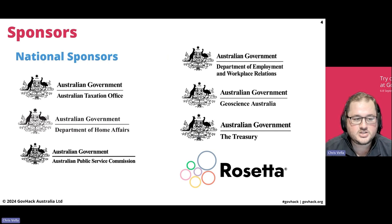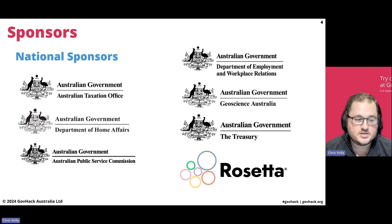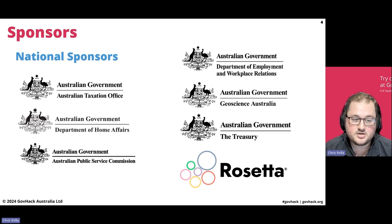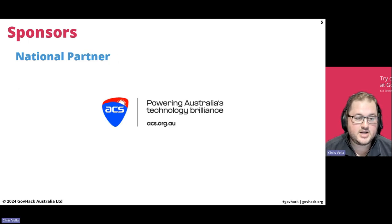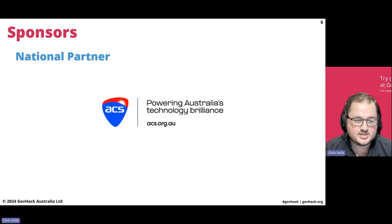Our national sponsors this year are the Australian Taxation Office, Department of Home Affairs, Australian Public Service Commission, Department of Employment and Workplace Relations, Geoscience Australia, the Australian Treasury, and Rosetta Analytics. Our national partner is the Australian Computer Society, ACS.